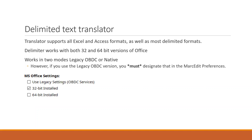MARCEdit supports two different types of Excel translations: a legacy ODBC mode and a native mode. The legacy mode is how MARCEdit worked prior to version 7. MARCEdit 6 and earlier used an ODBC driver — a database driver installed with Excel — to provide support for reading Excel and Access data. The challenge with the ODBC driver is that you had to tell MARCEdit which version of the driver you're using, since you can't install both 32-bit and 64-bit drivers on the same machine.